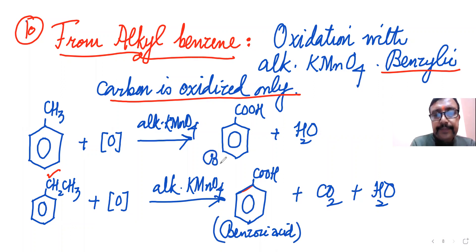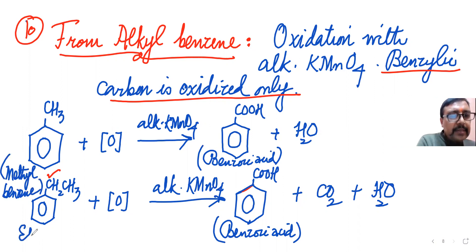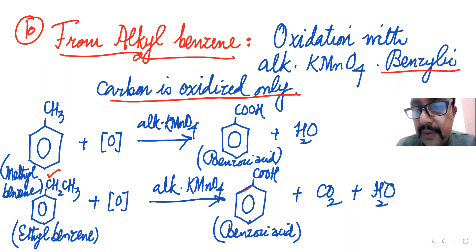All three give benzoic acid and the remaining carbons convert to carbon dioxide and water. First is methylbenzene or toluene, second is ethylbenzene, third is propylbenzene. All give benzoic acid. So alkyl benzene gives benzoic acid and only benzylic carbon is oxidized. This is very important for this chemical reaction. This is all about preparation of carboxylic acids.